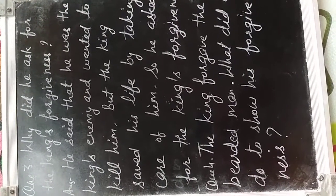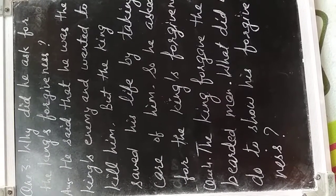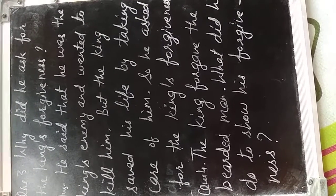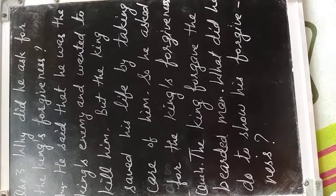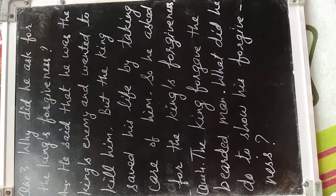Question number third: why did he ask for the king's forgiveness? Usne raja se maafi kiyo maanggi? He said that he was the king's enemy and wanted to kill him. Ki vahe raja ka shatru tha aur usko maar na chahata tha raja ko. But the king saved his life by taking care of him. Pur raja ne uska jivon bacha liya uski dhekwal karke. So he asked for the king's forgiveness. Islaya usnei raja se maafi maanggi.